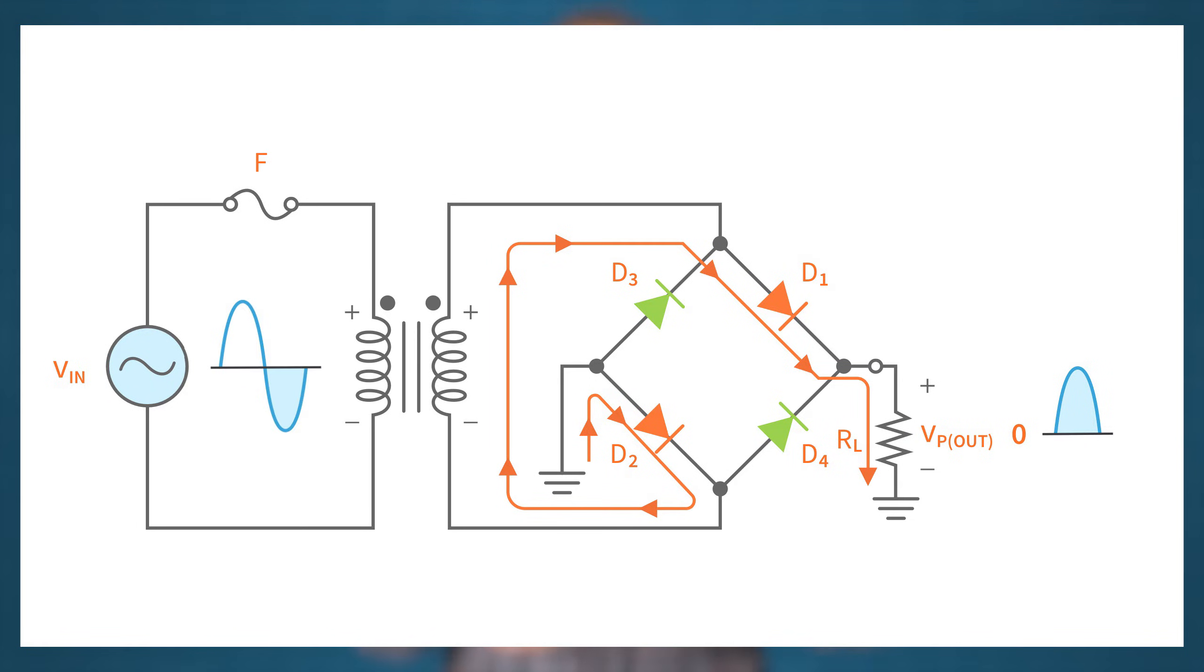When the AC input switches to the negative half-cycle, the polarity across the secondary winding of the transformer is reversed, and so is the flow of current. This time, D1 and D2 are reverse biased while D3 and D4 are forward biased.